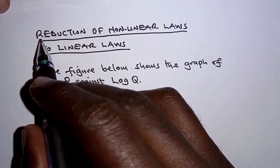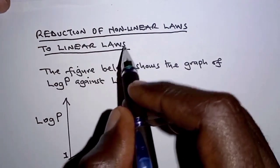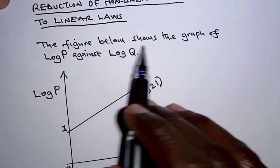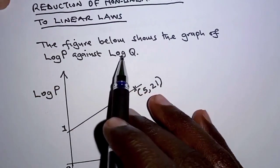The question we're discussing today is about reduction of nonlinear laws to linear laws. So we have the question reading, the figure below shows the graph of logarithm of P against logarithm of Q.